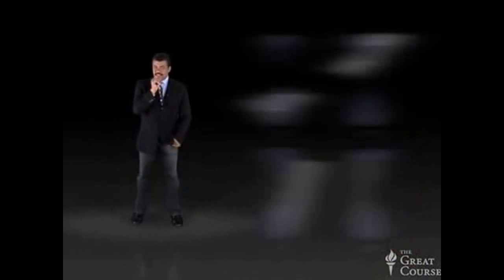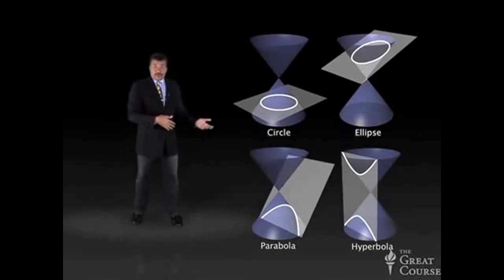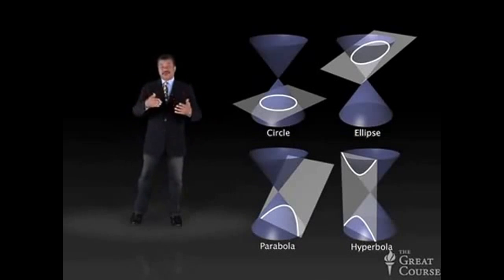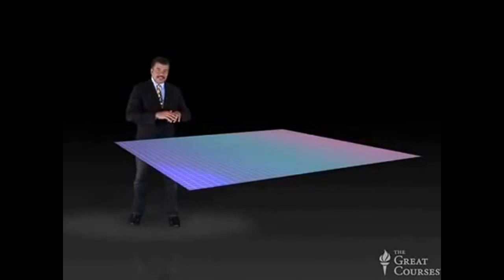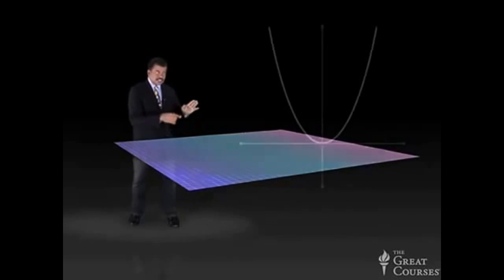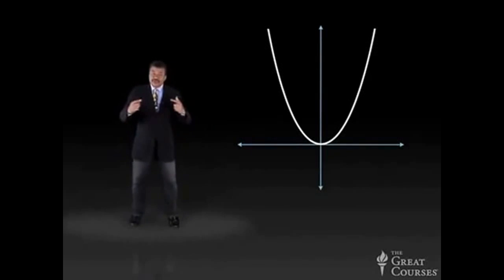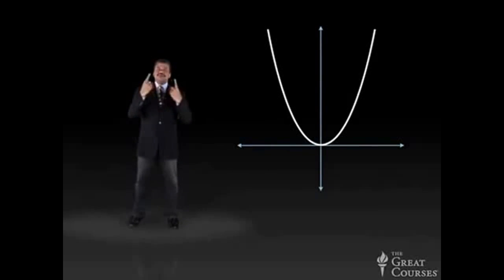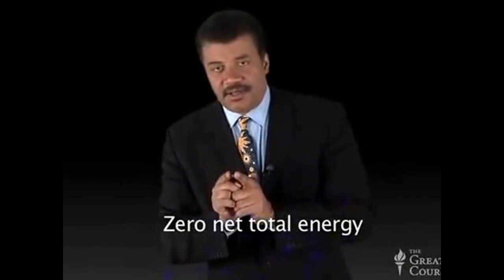These are what we call conic sections — intersections of a cone of light — and they relate to orbits, and they relate to the energy that those objects have. Now, if your space-time is flat, just as if your orbit were a parabola, it means the universe — the entire universe — possesses zero net total energy.